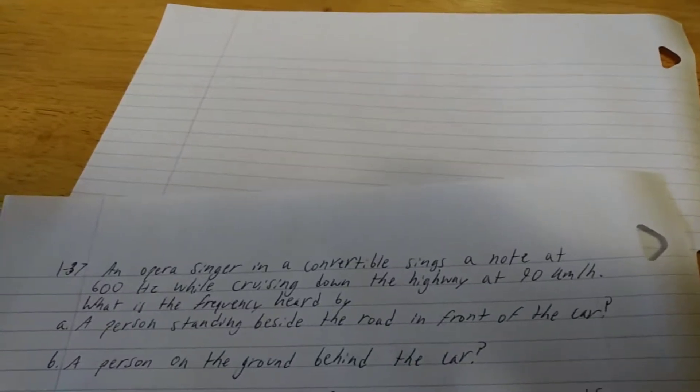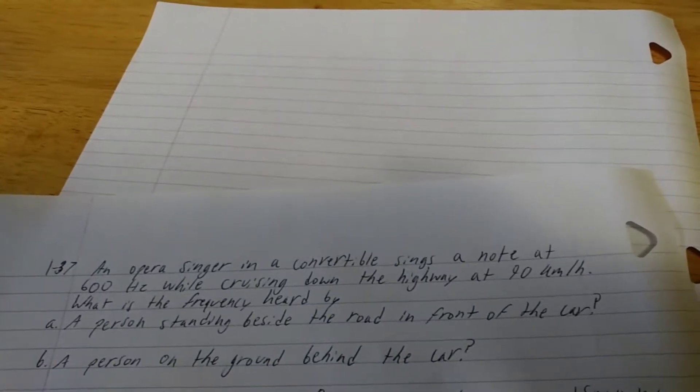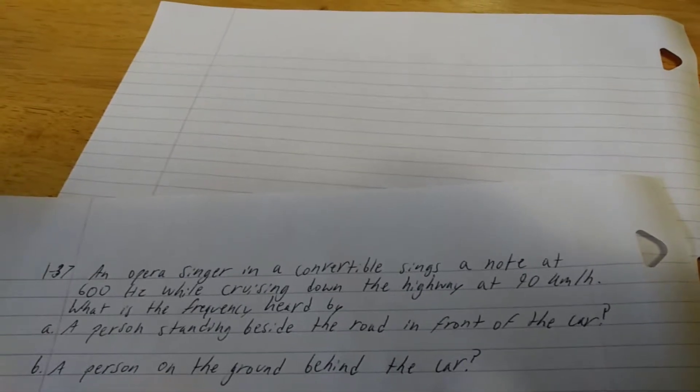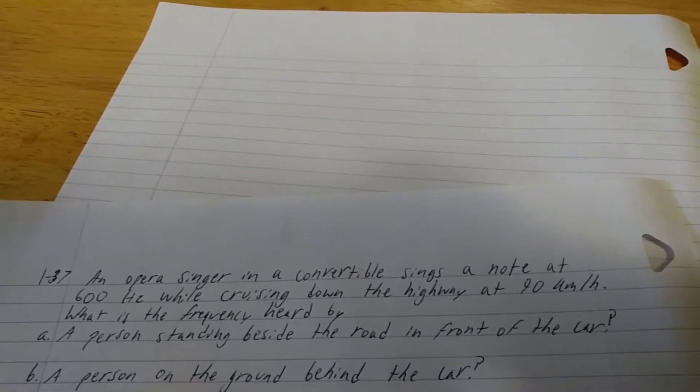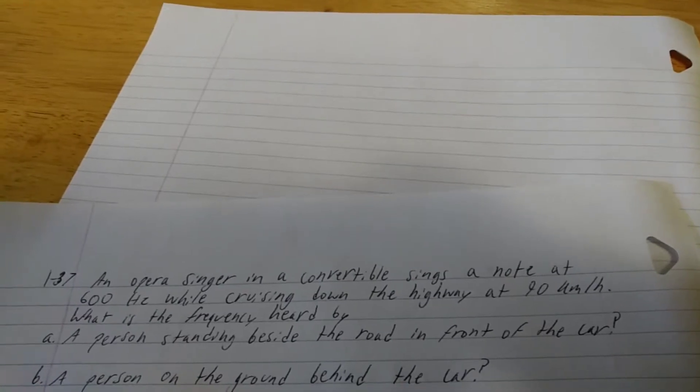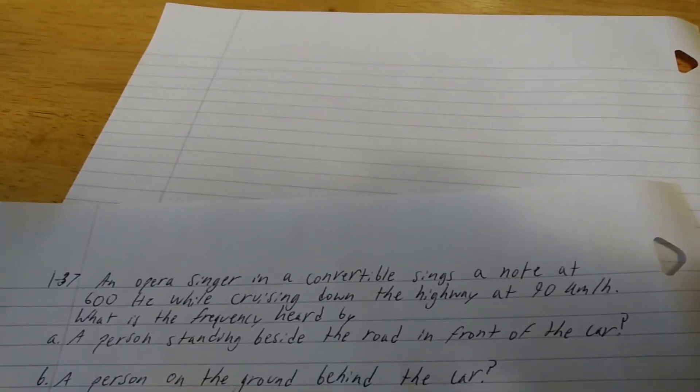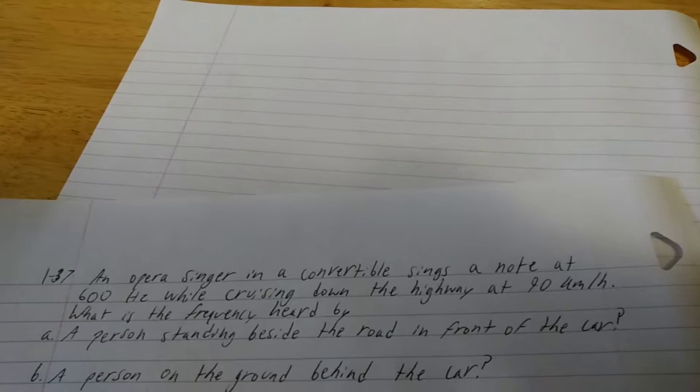Today we'll be doing problem number 37 from homework 1, which says an opera singer in a convertible sings a note at 600 hertz while cruising down the highway at 90 kilometers per hour. What is the frequency heard by A, a person standing beside the road in front of the car, and B, a person on the ground behind the car?